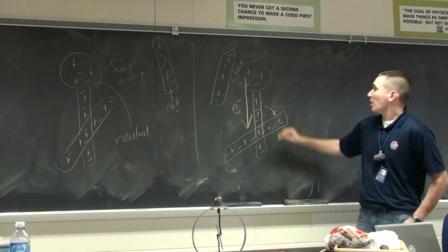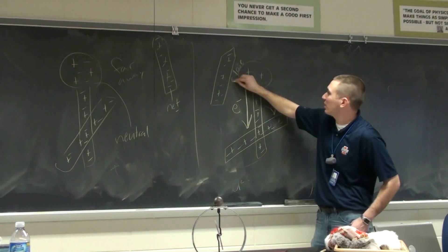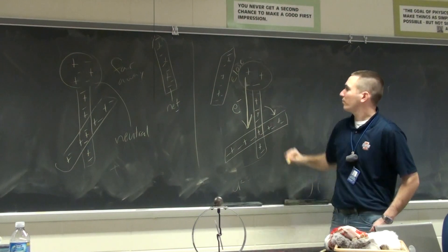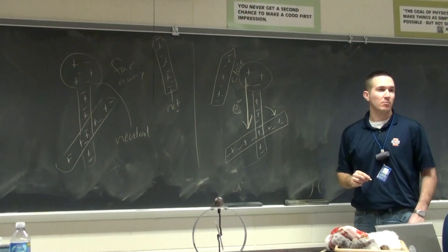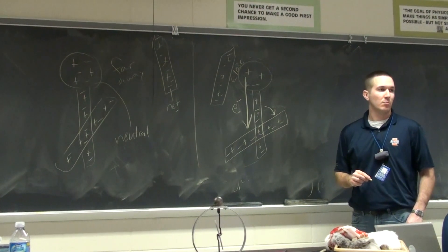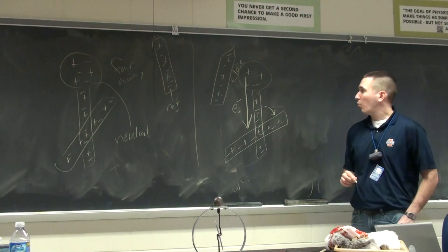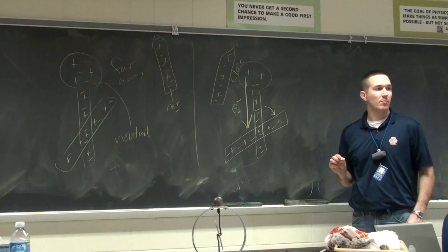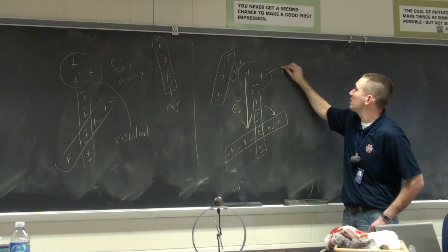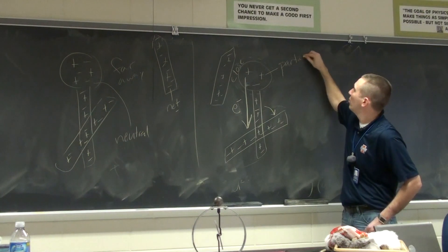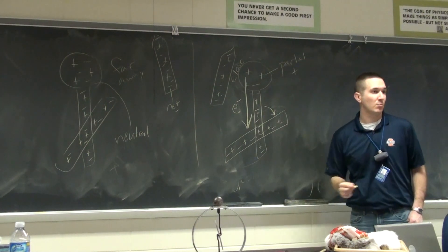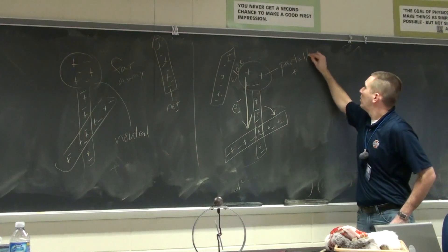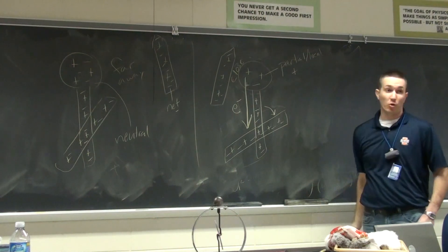So when I look at this, up at the top, if I just look here, I have three positives and one negative. Now that little bit, is it positive or negative? Positive. So what we're going to call this is partial positive or a local positive.